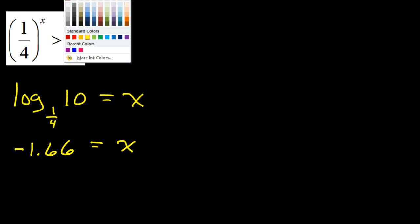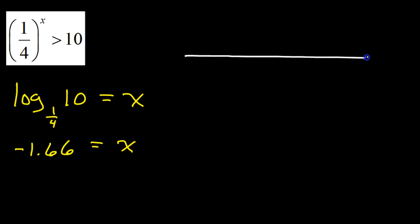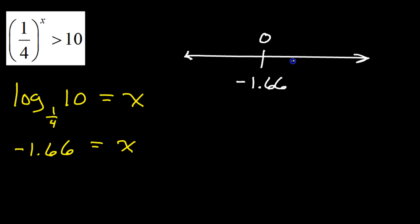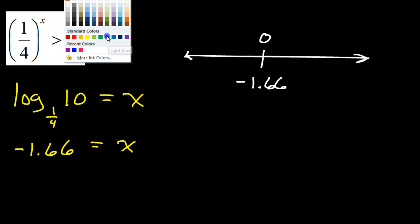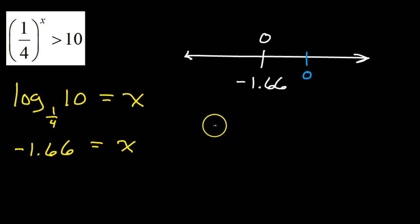Let's go ahead and put that on a number line. Here's negative 1.66, and our critical value we will graph as a circle — sometimes open, sometimes closed. Which will it be here? Open circle, because it's not equal to, it's just greater than 10. We have to figure out: will the solutions be to the right of this critical value or to the left? What we do is use a test value. For exponential functions, I like to use a test value of 0.